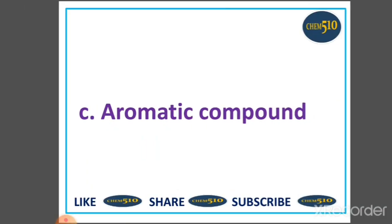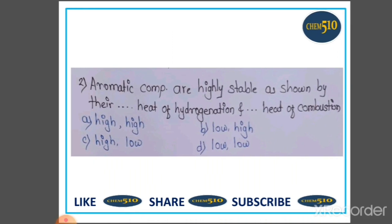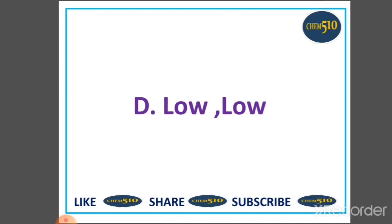Second question: Aromatic compounds are highly stable as shown by their ____ heat of hydrogenation and ____ heat of combustion. This is a property of aromaticity called unusual stability, in which aromatic compounds are highly stable as shown by their low heat of hydrogenation and low heat of combustion. So option D is correct: low and low.